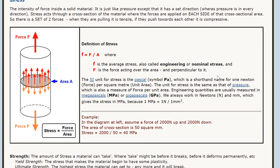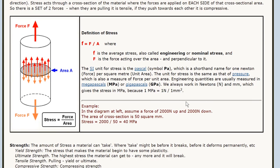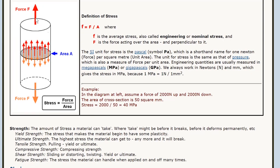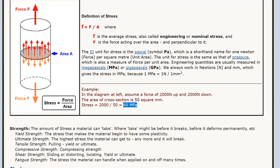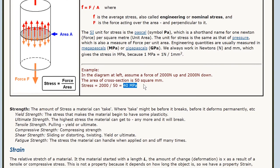A megapascal is a newton per square millimetre, which is convenient. So if we work in millimetres, we'll automatically get megapascals. For example, if the force is 2,000 newtons and the cross-sectional area is 50 square millimetres, then the stress is 2,000 divided by 50, which is 40 megapascals. So if a 50 square millimetre rod holds 2,000 newtons — about 200 kilograms — it'll be under 40 megapascals. Steel can handle about 250 megapascals, so that would be quite safe.